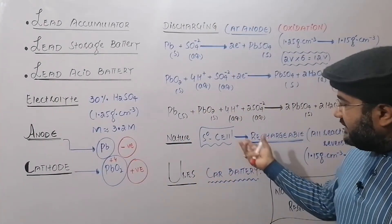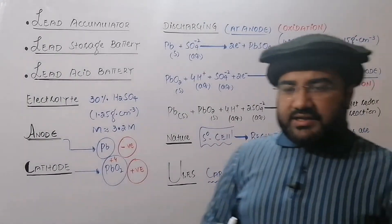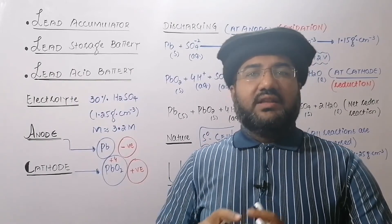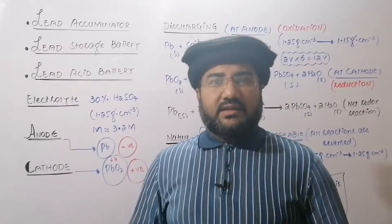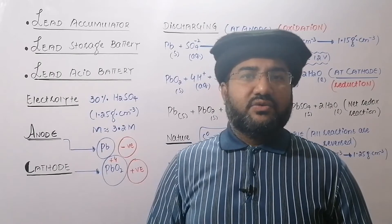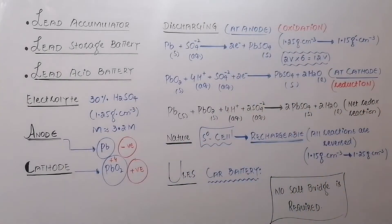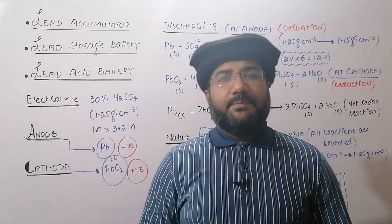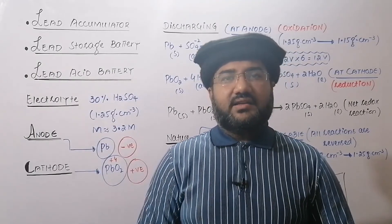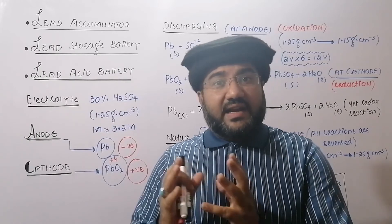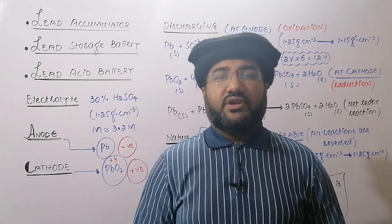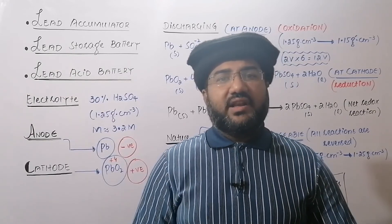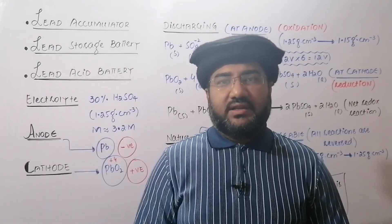This battery is basically a car battery. In cars, electric energy is required to turn the engine on, to turn the lights on, to turn the music system on, and that electric energy is provided by the lead storage battery. Nowadays dry batteries are also used, but still in many cars the lead accumulator is used. An important point: no salt bridge is required in the lead accumulator. This is because there is a single electrolyte — sulfuric acid. A salt bridge is used only when a cell consists of two electrolytes, as in the Daniel cell which uses zinc sulfate and copper sulfate. Since the lead acid cell has a single electrolyte, there is no need for a salt bridge.